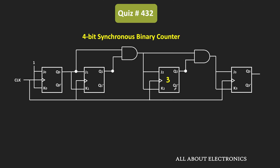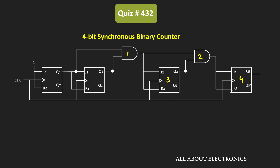The third flip-flop will receive the stable input after the propagation delay of one AND gate. Likewise, the fourth flip-flop will receive the stable input after the propagation delay of two AND gates. Once they receive the stable input, after the propagation delay of the flip-flop, they will generate the stable output. That means the last stage will take the maximum time to generate the stable output, and that corresponds to the maximum propagation delay of the synchronous counter.